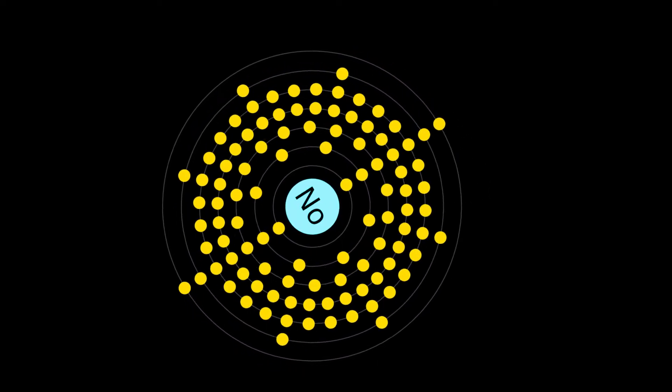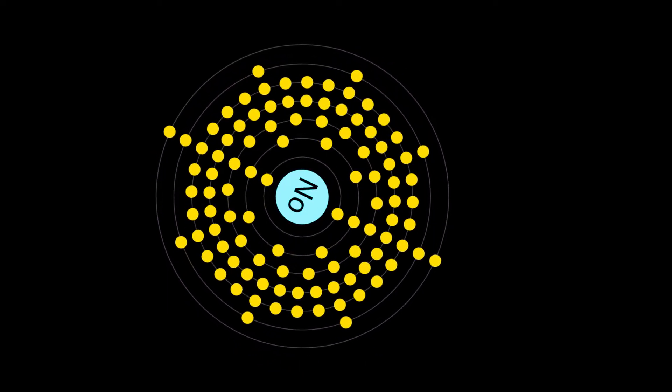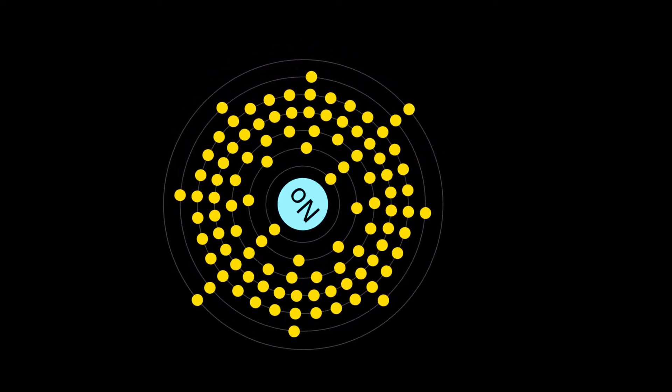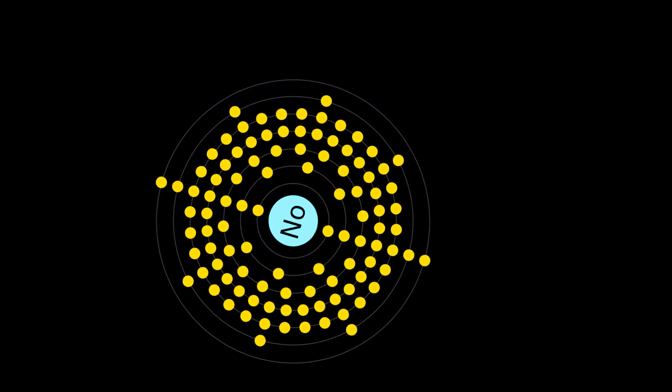Nobelium is a synthetic chemical element with symbol NO and atomic number 102. It is named in honor of Alfred Nobel, the inventor of dynamite and benefactor of science.